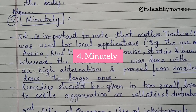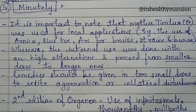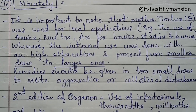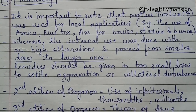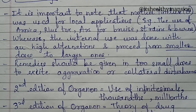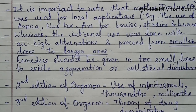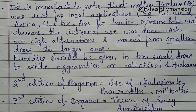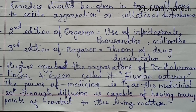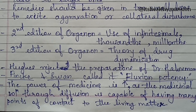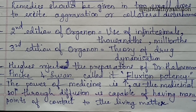Fourth point is administration of the remedy minutely. It is important to note that mother tincture was used for local applications — for example, the use of arnica, rhus tox, and arsenic for bruises, strains, and burns. Whereas the internal use was done with high dilutions and proceeded from smaller doses to larger ones. However, remedies should be given in sufficiently small doses to avoid aggravation or collateral disturbances — here he is referring to homeopathic aggravation.